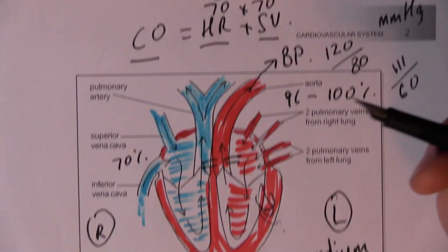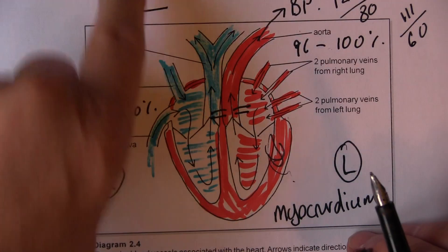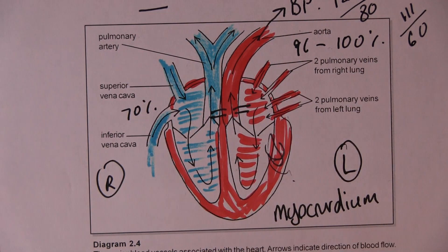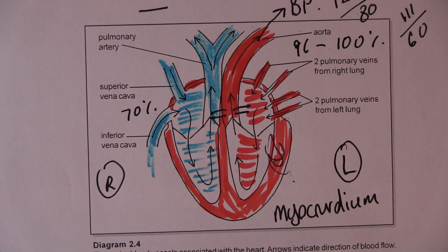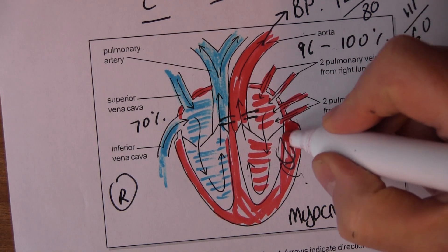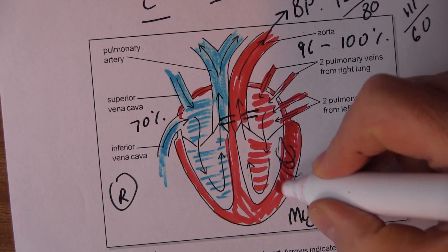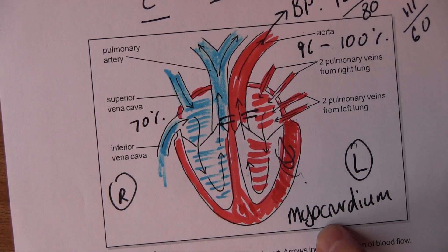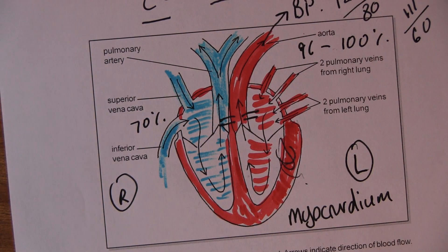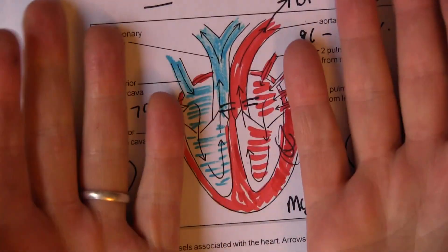The volume of blood pumped out by the right side of the heart is exactly the same as the left — they must be equal, otherwise the lungs would fill up or the body would empty of blood. We always notice in these diagrams that the left ventricular myocardium wall is much thicker than the right, because it has to pump blood around the whole body.